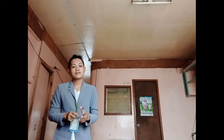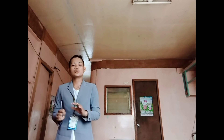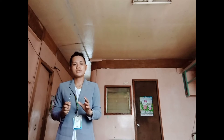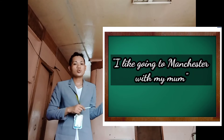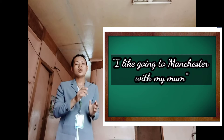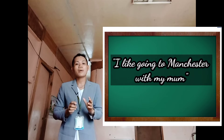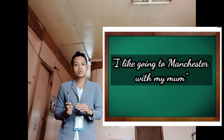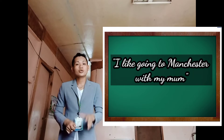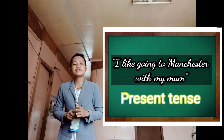Can you make the following sentence into the past, the present, and the future tense? 'I like going to Manchester with my mom.' Please raise your right hand. Okay, Lloida. Your answer — 'I like going to Manchester with my mom' — refers to what kind of verb tense? Your answer is present tense. Okay, correct. How about the past and future?